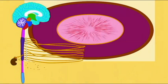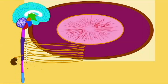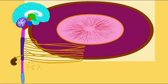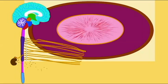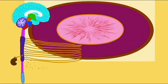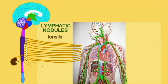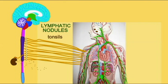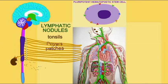Some of this innervation controls vasculature, and so blood flow to immune structures is under sympathetic control. In addition, the sympathetic neurons travel to parenchymal tissues in these lymphatic structures, where neurons interact with immune cells.